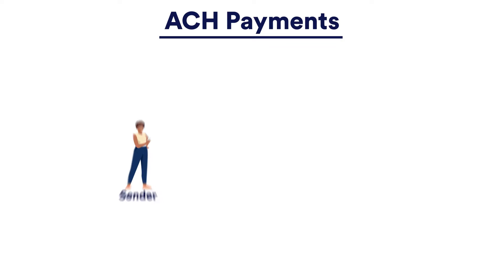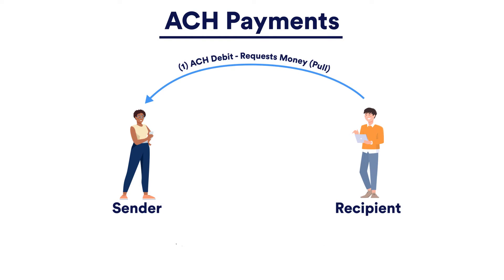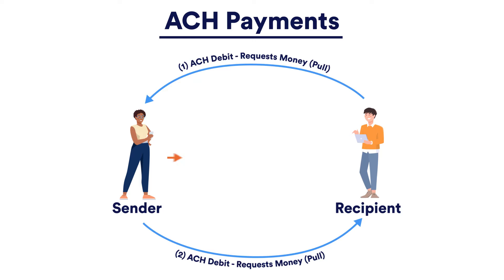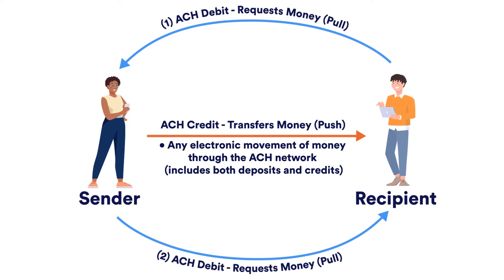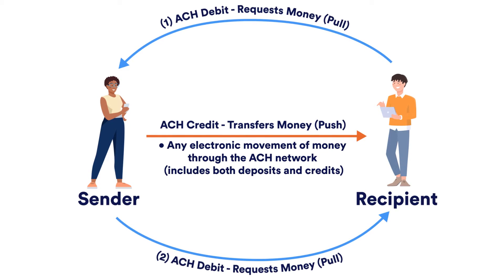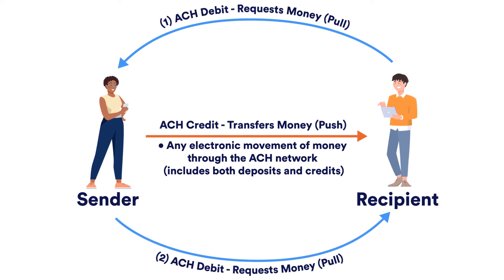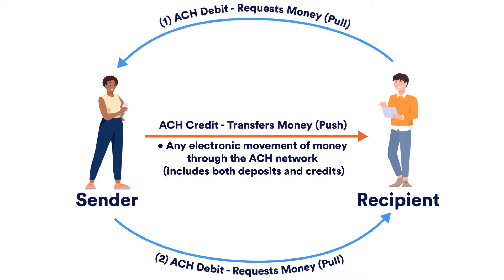ACH debit, or direct payment, is a transaction through the ACH network that results in funds being pulled from the transaction initiator's account and sent to the recipient. ACH credit is also a transaction through the ACH network, except that the funds are pushed from one account into another. An ACH transfer is any electronic movement of money through the ACH network, meaning it encompasses both ACH deposits and credits.